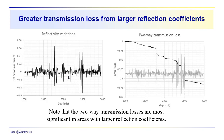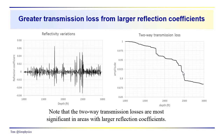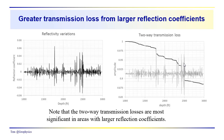If we superimpose this reflectivity series on top of the two-way transmission losses, we can see that these abrupt drops — these abrupt losses in reflection energy — are associated with large reflection coefficients. We have a series of large reflection coefficients here, positive, negative, positive, negative, producing a stepwise drop. Here we have a cluster of reflection coefficients, and you can see a rather significant drop across this entire interval associated with this cluster of large reflection coefficients. These transmission losses are most significant in areas with larger reflection coefficients.